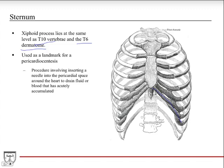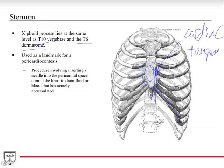The needle is slipped just lateral to the xiphoid process and underneath the costal margin. There's a sac around the heart called the pericardial sac. Blood or fluid can build up in there — that's called cardiac tamponade — which is fluid building up around the heart. If it builds up too fast, it can compress the heart and be fatal. So you want to stick a needle in there as soon as possible and drain that fluid out.